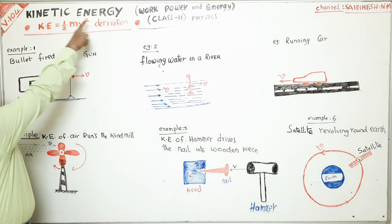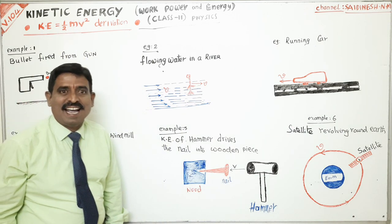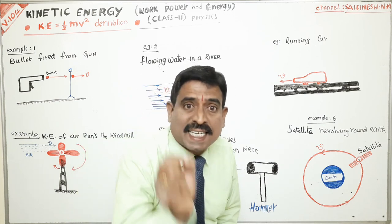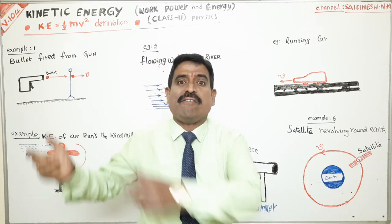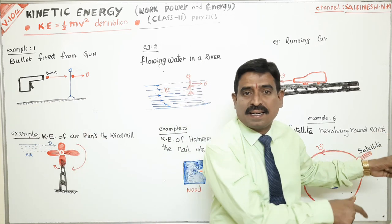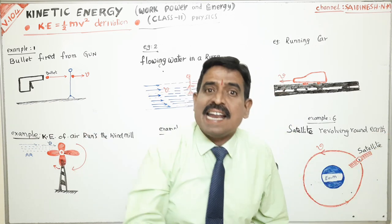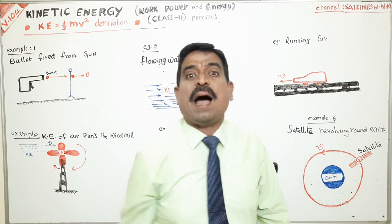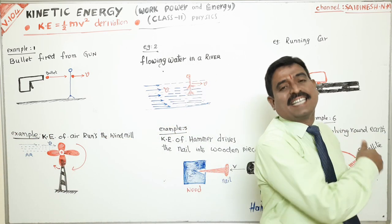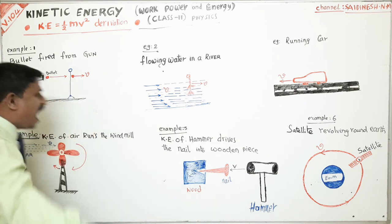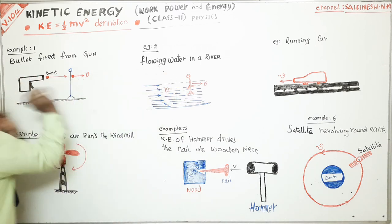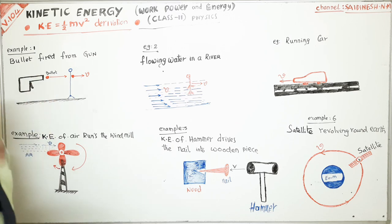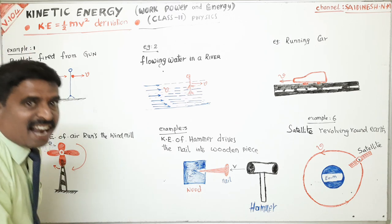The definition of kinetic energy: kinetic energy is the energy possessed by the body by virtue of its motion, or by virtue of its velocity. When a bullet is fired, due to its velocity, it is having energy — that energy we call kinetic energy.